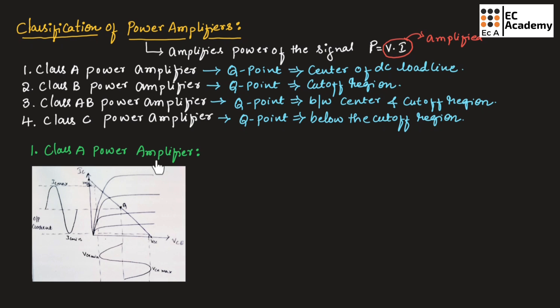Let us understand class A power amplifier. In class A power amplifier, the Q point is located at the center of the DC load line. Since the Q point is at the center of the DC load line, the output signal varies over the full cycle of the input signal as shown in this figure.